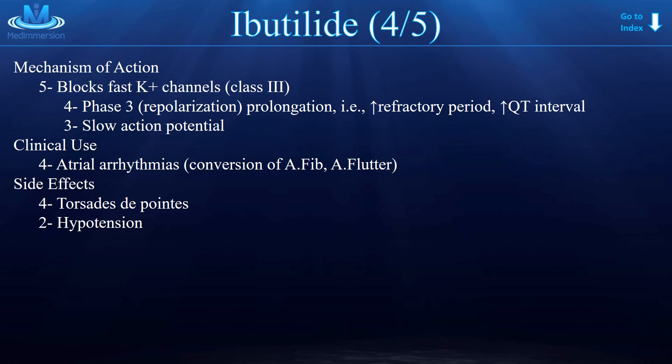Next is ibutilide, which is slightly less high yield than amiodarone — I'd give it a four out of five. There's not a lot new about the mechanism of action; however, the clinical use shifts a little toward atrial arrhythmias, so AFib and AFlutter. Side effects include Torsades de pointes, which is an important side effect for these drugs, and possibly hypotension.